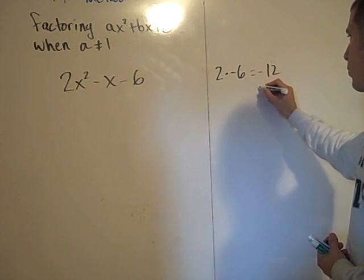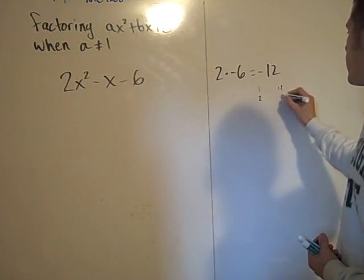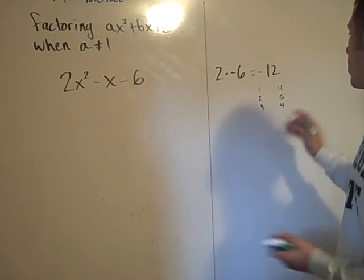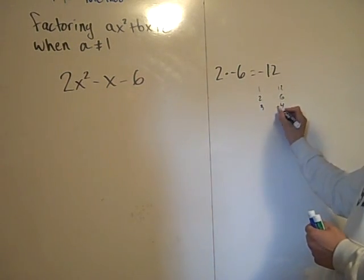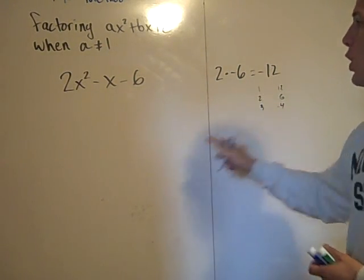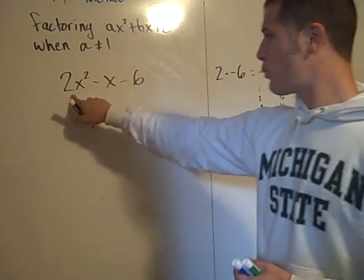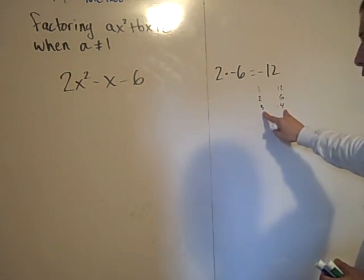We then search for factors of negative 12 that add to negative 1. Well, the factors of negative 12, 1 and 12, 2 and 6, 3 and 4. That's the best we're going to do. We want a negative 1, so it's going to be the negative 4 and the positive 3.